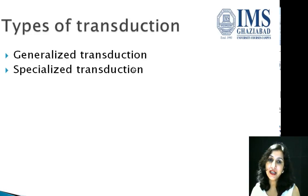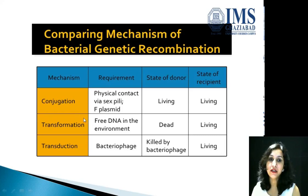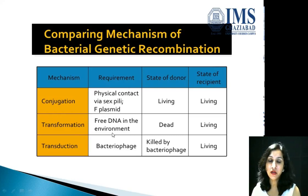Transduction is of two types: generalized transduction and specialized transduction. Comparing the three mechanisms of bacterial genetic recombination: in conjugation, physical contact, sex pili, and a plasmid are required — both donor and recipient are living. In transformation, free DNA is required — the donor is dead and the recipient is living. In transduction, a bacterial phage is required — the donor is killed by the phage and the recipient is living.